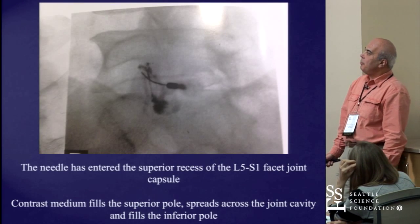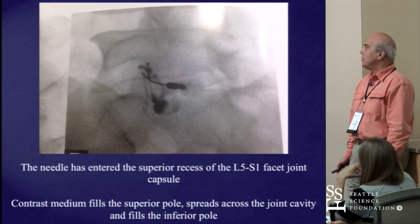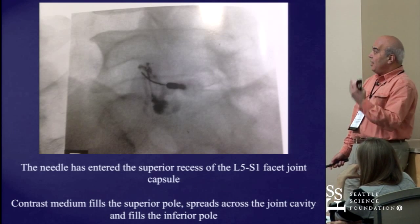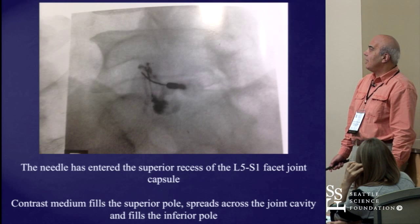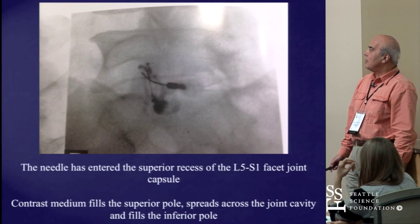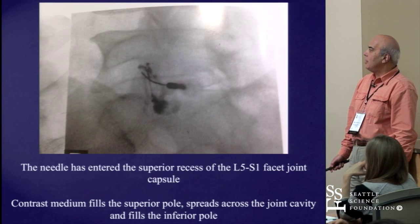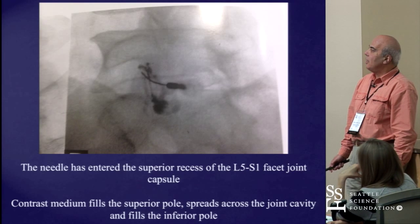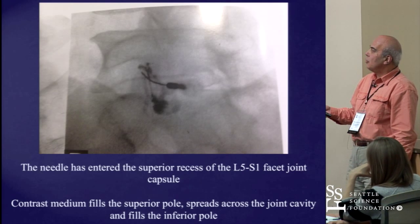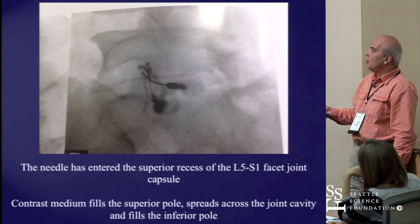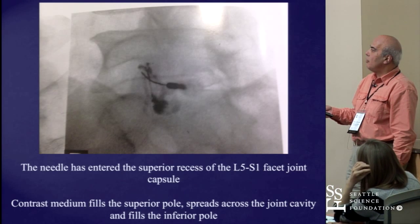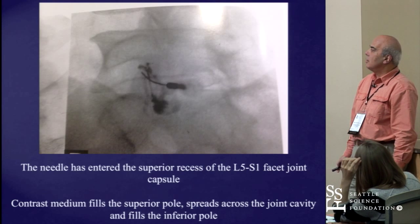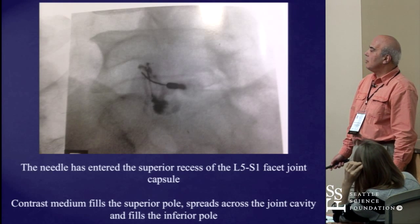This is a picture of an L5-S1 facet joint. You can see the needle that has entered the superior recess of the joint, with contrast filling the dorsal capsule, the ventral capsule, and a streak of contrast within the joint line.